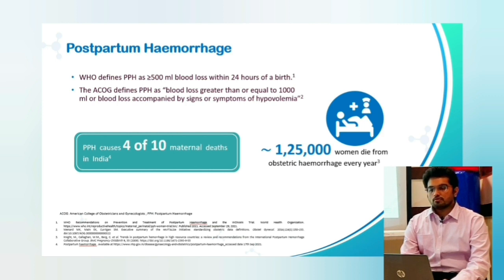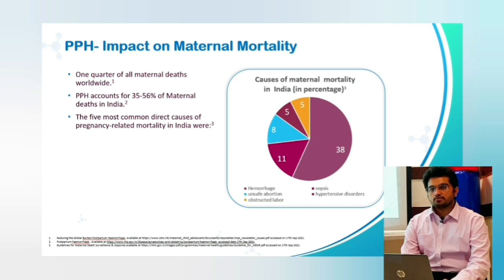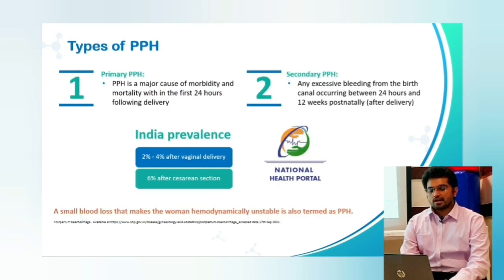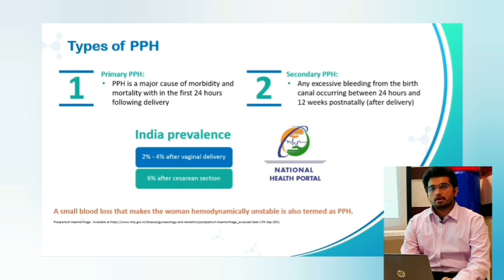PPH accounts for 35–56% of maternal deaths in India, representing about a quarter of all maternal deaths worldwide. The five most common direct causes of maternal death in India were hemorrhage, unsafe abortions, sepsis, hypertensive disorders like preeclampsia and eclampsia, and obstructive labour — the highest being postpartum hemorrhage at 38%. There are two types: primary PPH, which is the major cause of mortality and morbidity within the first 24 hours of delivery, and secondary PPH, which occurs after 24 hours but within 12 weeks postnatally. In India, the prevalence is 2–4% for vaginal deliveries and around 6–8% for caesarean deliveries. A small blood loss that makes a woman hemodynamically unstable in blood pressure, pulse, or general condition is also termed postpartum hemorrhage — it doesn't have to arbitrarily be 500 ml or 1000 ml.